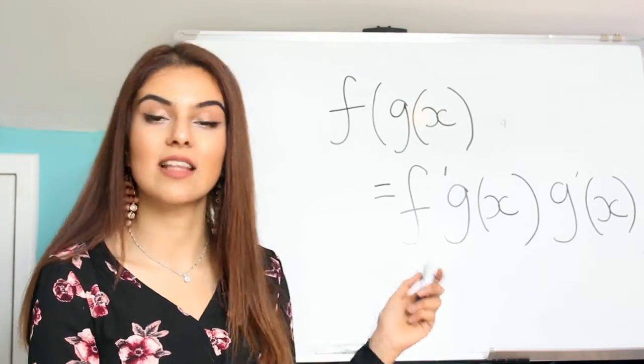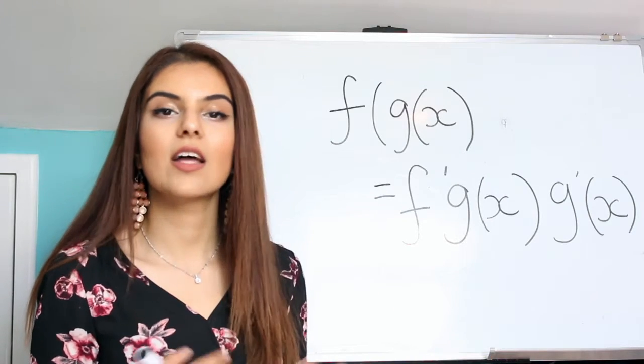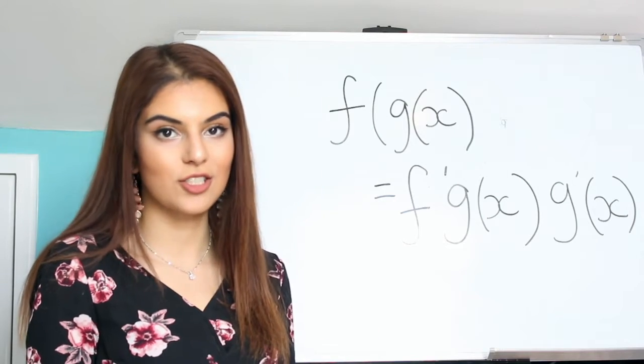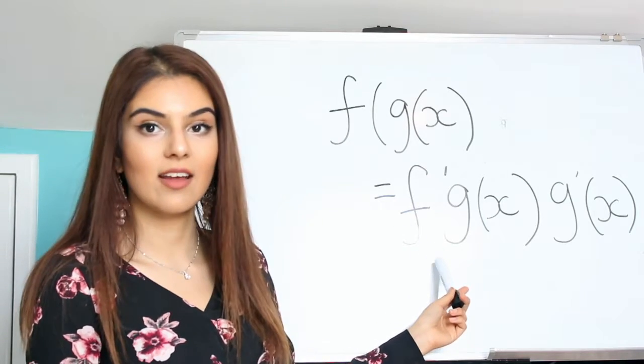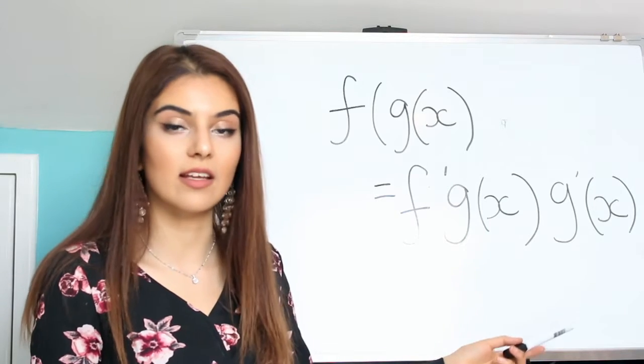So we look at f and g as layers to the problem. Function f would be the outside of the layer and the function g would be the inner layer. The rule basically tells us to differentiate the outer layer, leaving the inner layer the same, and then differentiate the inner layer g.